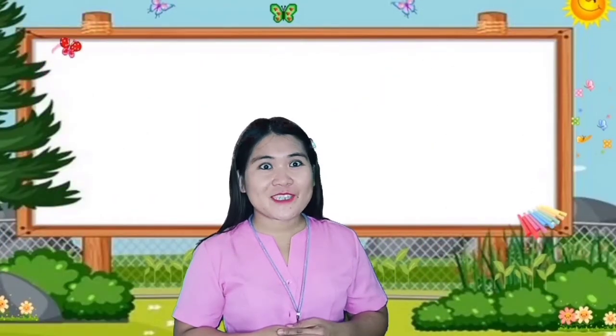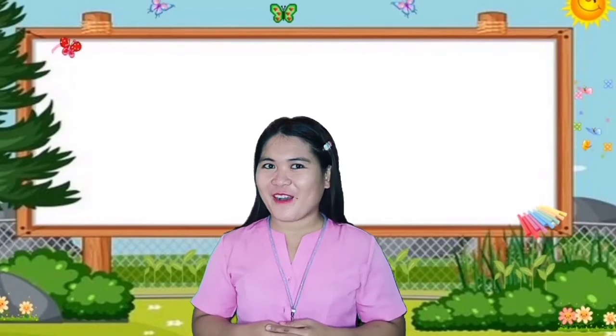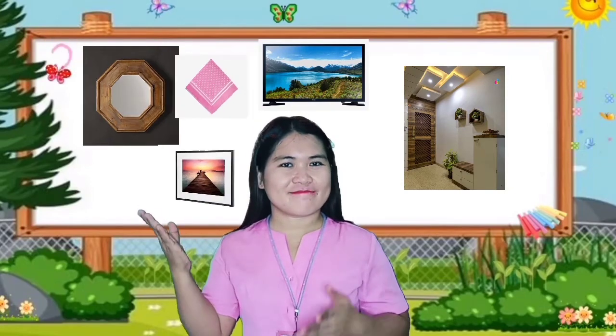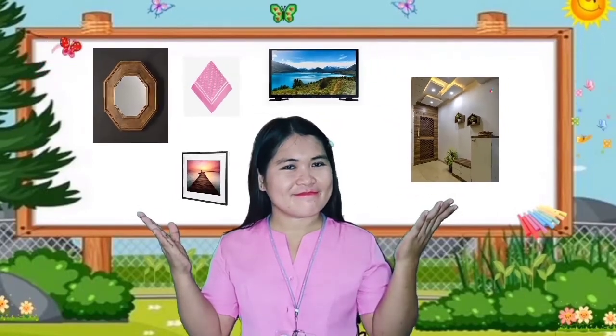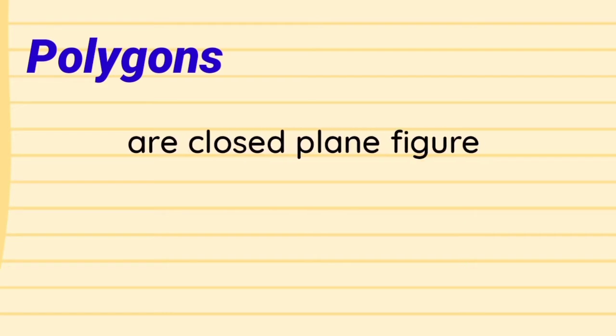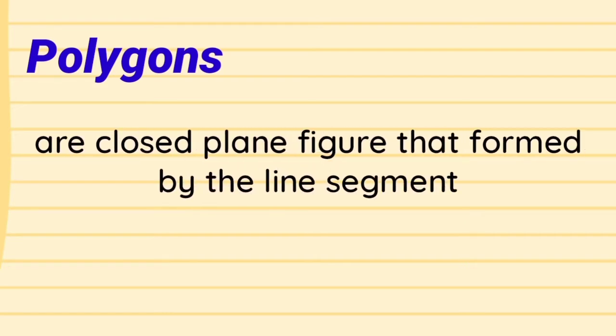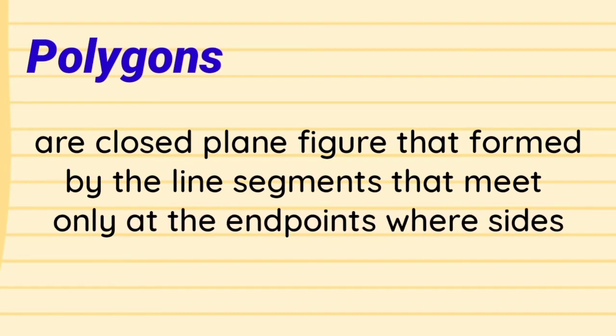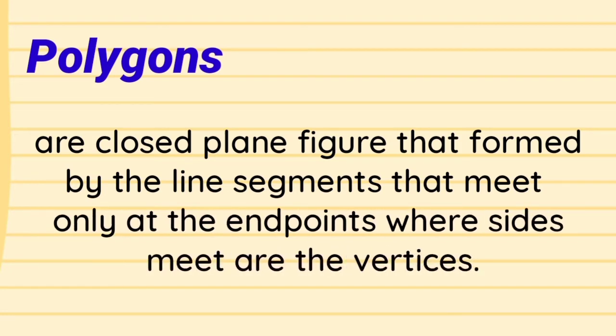Do you see some polygons in your house? Yes, they are polygons. Polygons are closed plane figures formed by line segments that meet only at the endpoints, where sides meet are called the vertices.